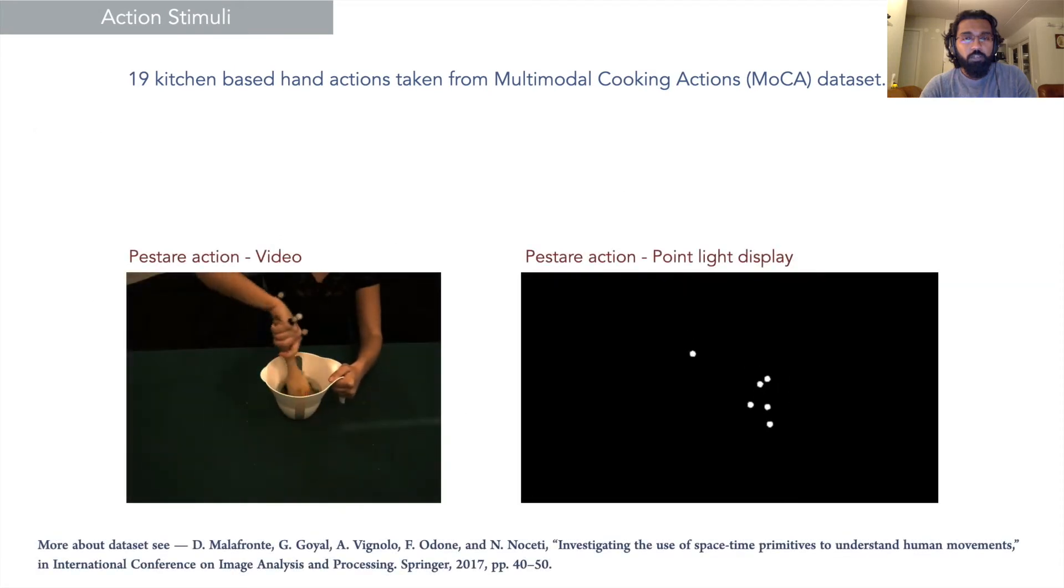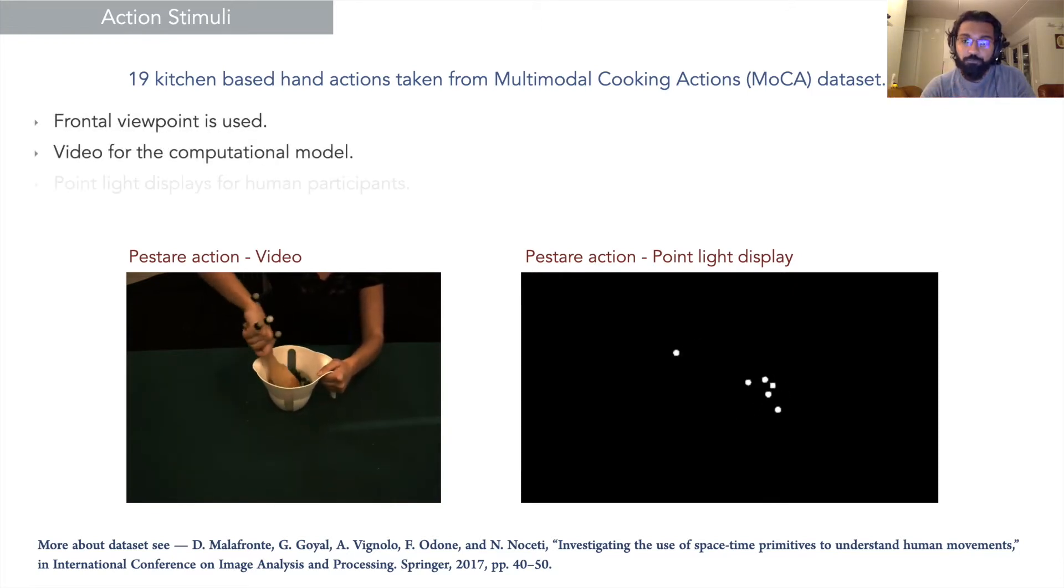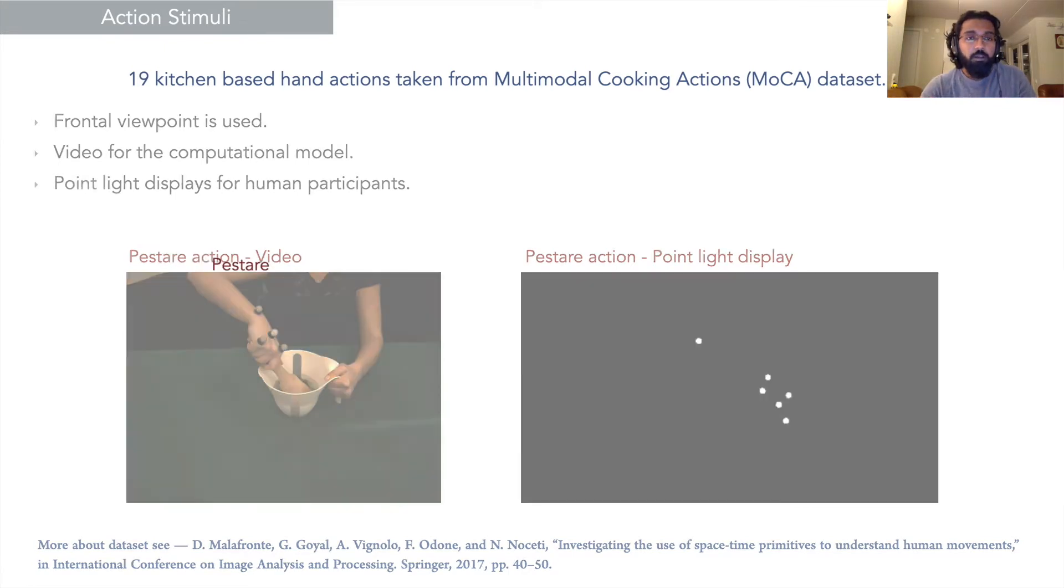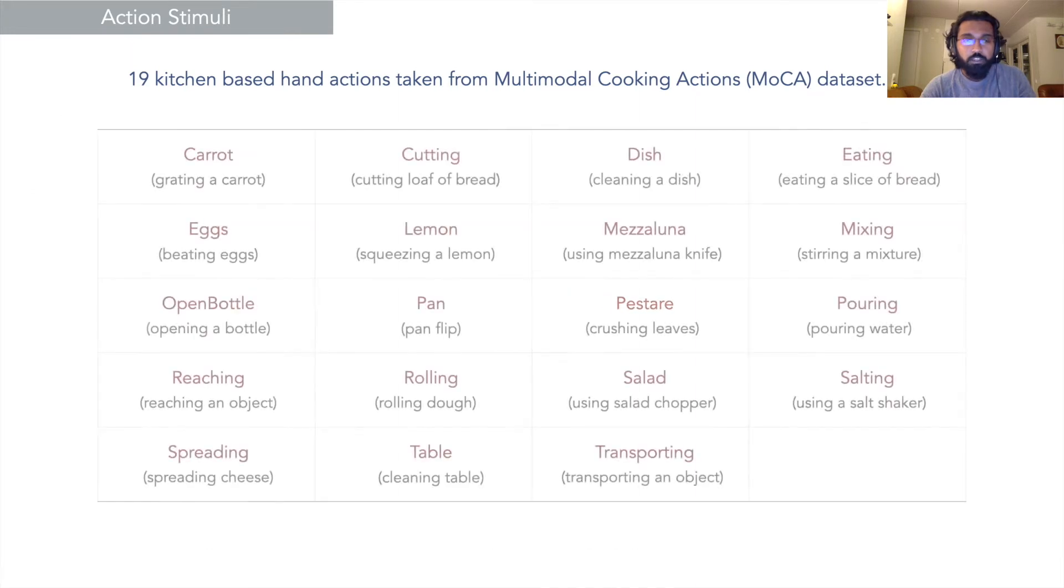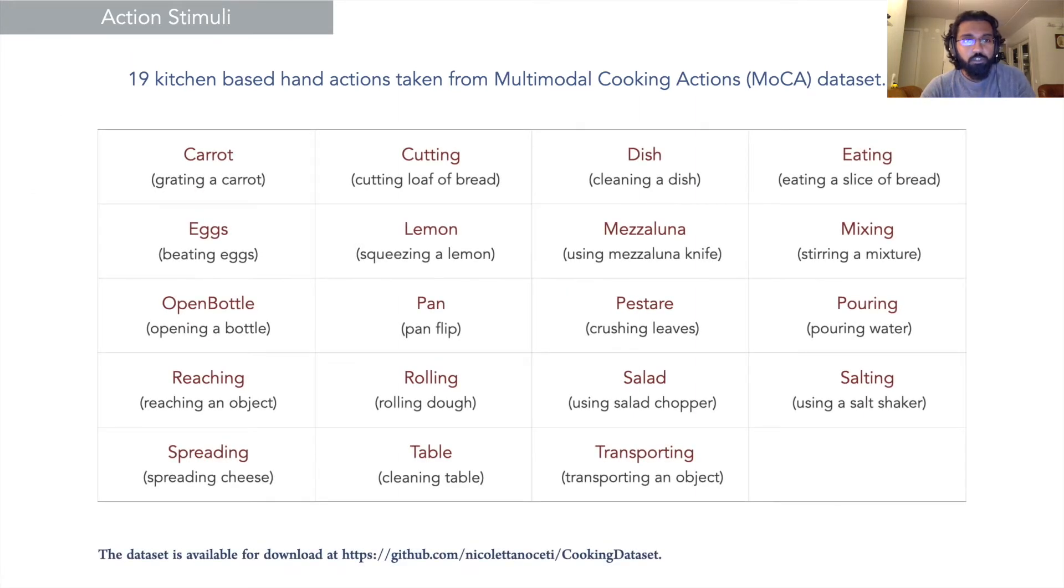For the actions, we can see one example here—a pestling action. We have the video and the respective point light displays. Point light displays are given to the humans whereas the video is given to the computational model. Point light displays separate the contextual information. We have 19 other actions, and as you can see, all of them are kitchen-based actions and most are very familiar actions.